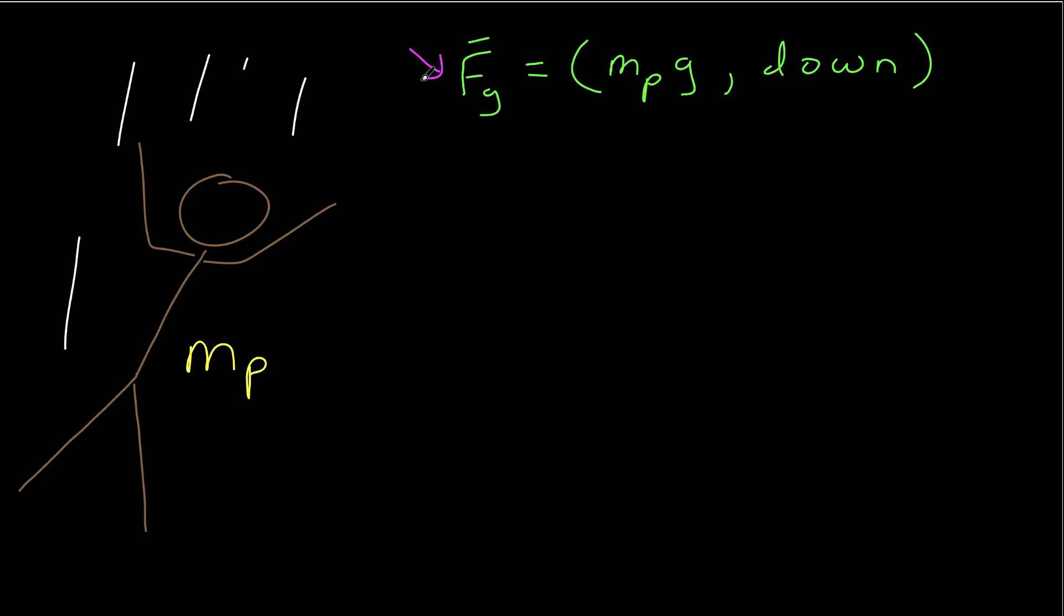Our model says there is a force due to gravity. Here I've given it sub g for gravity and the vector sign to indicate it's a force. It has a magnitude equal to the mass times g, and the direction is down. Let's get a mathematical representation of that.